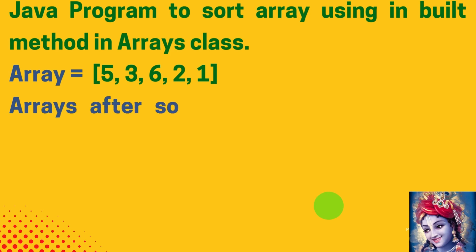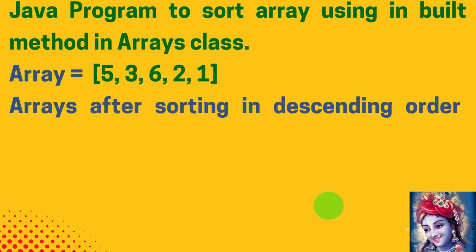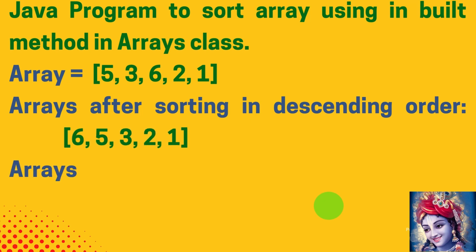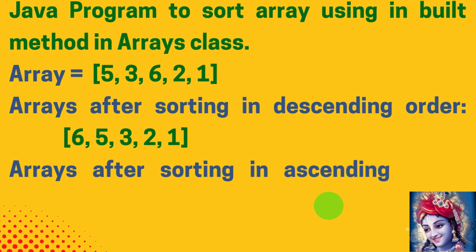After sorting the array elements in descending order we need to print it as 6, 5, 3, 2, 1. Similarly, after sorting the array in ascending order we need to print the output as 1, 2, 3, 5, 6.